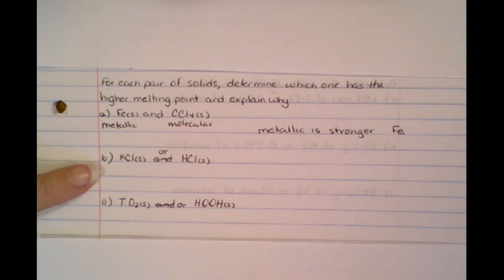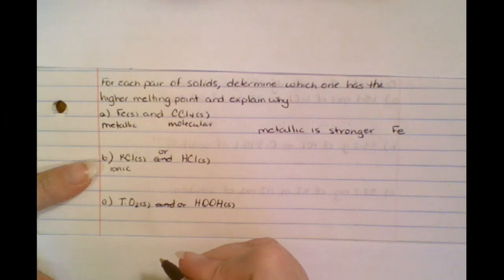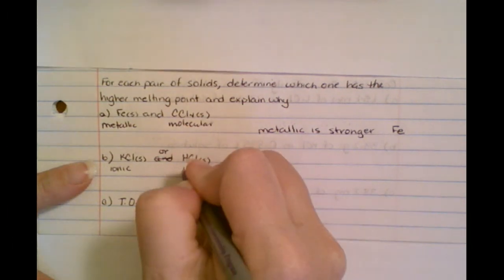So let's use that same rationale with the second one. So I've got KCl. Well, that's an ionic bond, because it's a metal and a nonmetal. So I've got HCl, that's a molecular.